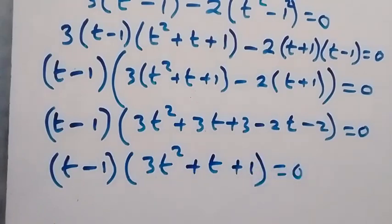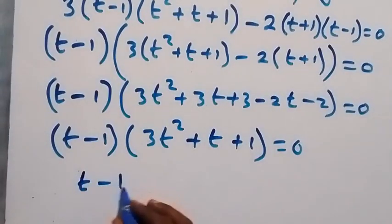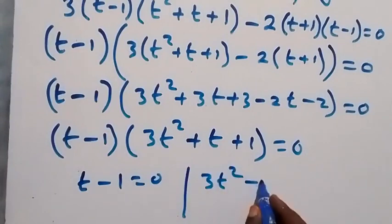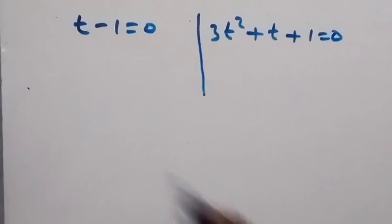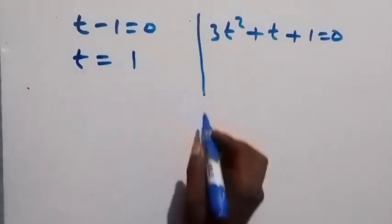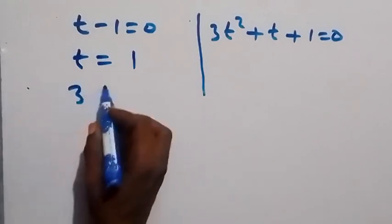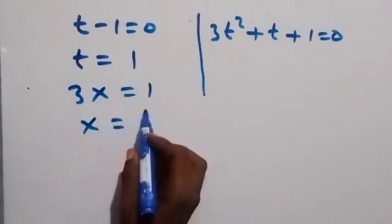We now have two possible cases: t minus 1 equals 0, or 3t squared plus t plus 1 equals 0. From the first case, t equals 1. Recalling that t equals 3x, we have 3x equals 1, so x equals 1 over 3.